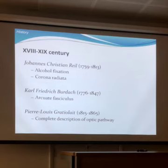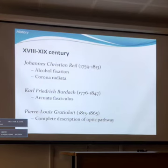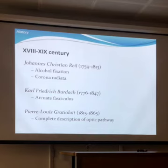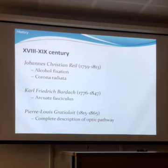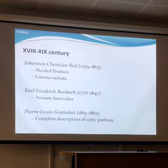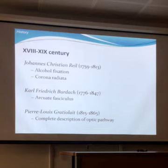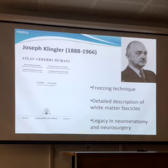Later, the method of dissection was improved by Johannes Christenre, the German neuroanatomist, who started to fix the brain in alcohol — moving from fresh specimens to a first attempt at fixation. This improved white matter dissection, and he identified and described the corona radiata in more detail. This allowed other investigators and prominent neuroanatomists — including Dejerine and Vicq d'Azyr — to describe more complex white matter structures like the arcuate fascicles, the optic pathway, and the mammillothalamic tract. This brings us to Joseph Klingler at the beginning of the last century, who further improved the technique.